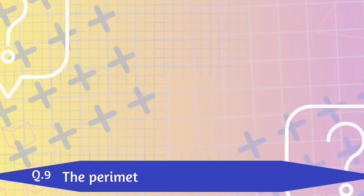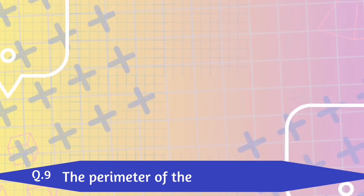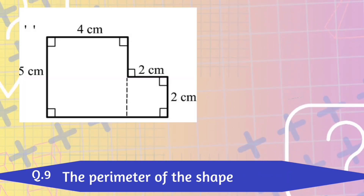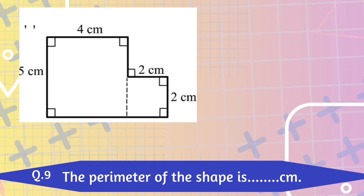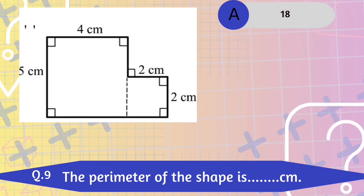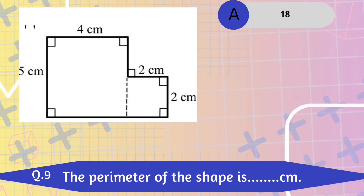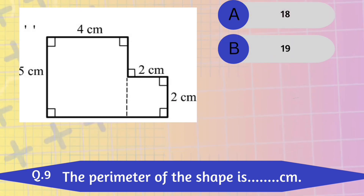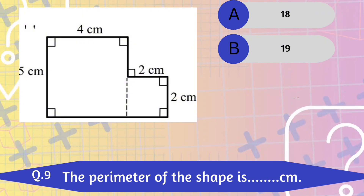Question number 9. The perimeter of the shape is dash cm. A. 18 centimeters. B. 19 centimeters.